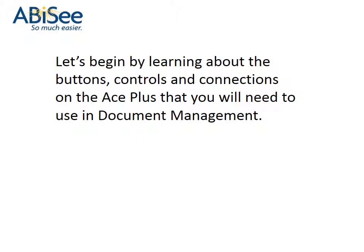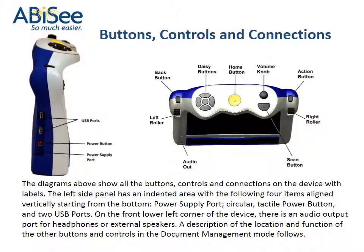Let's begin by learning about the buttons, controls and connections on the Ace Plus that you will need to use in document management. The diagrams above show all the buttons, controls and connections on the device with labels. The left side panel has an indented area with the following four items aligned vertically starting from the bottom: power supply port, circular tactile power button, and two USB ports. On the front lower left corner of the device, there is an audio output port for headphones or external speakers.